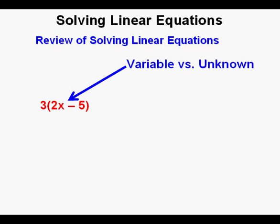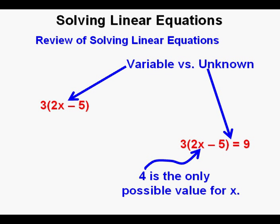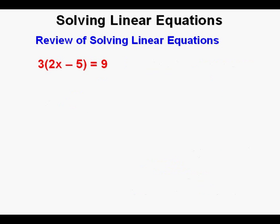Let's take a review of what we covered in this lesson. We went over the distinction between a variable and an unknown. A variable is the letter in an algebraic expression such as 3 times quantity 2x minus 5 — it's a variable because it can vary and be any real number. But in an equation like 3 times quantity 2x minus 5 equals 9, x is an unknown because in the equation x has a specific value. We don't know what it is yet, so we call it an unknown instead of a variable.